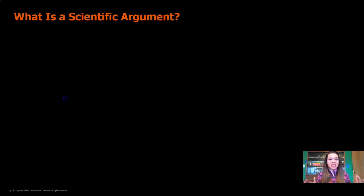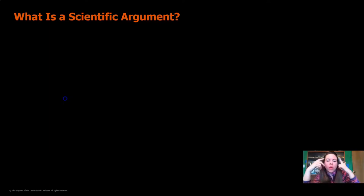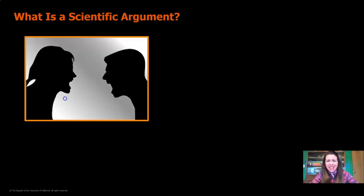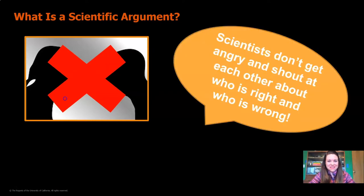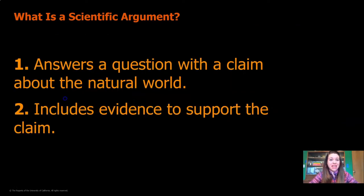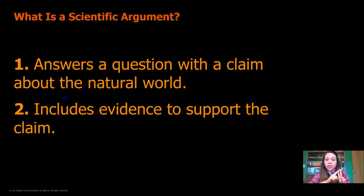Now we're going to work together to write our first scientific argument. But wait — what is a scientific argument anyway? What do you think of when you hear the word argument? When I visualize the word argument, I think of two people yelling at each other and being really mad. But that's not what a scientific argument is. Scientists don't get angry and shout at each other about who's right and who's wrong. Instead, a scientific argument does two things: number one, it answers a question with a claim about the natural world, and number two, it includes evidence to support the claim.